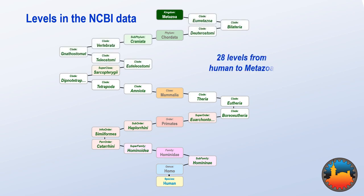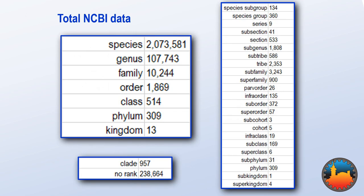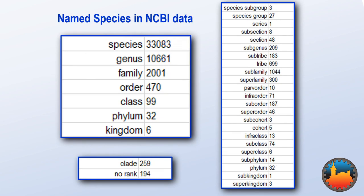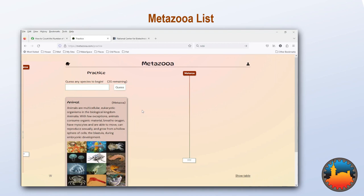The NCBI data is big — it lists more than 2 million species. So the first thing we need to do is to reduce our data down a little bit. If we restrict ourselves to just species that have common names, we only have 33,000 species to deal with.